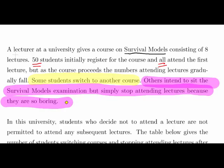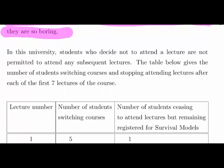We're going to set up two different outcomes here as to why students drop out or don't continue to the end. This requires a suspension of disbelief, so just go along with this scenario. In this university, students who decide not to attend a lecture are not permitted to attend any subsequent lectures. The table below gives the number of students switching courses and stopping attending lectures after each of the first 7 lectures of the course.